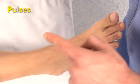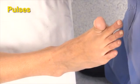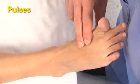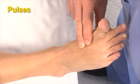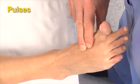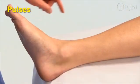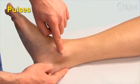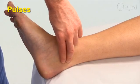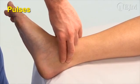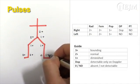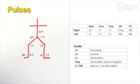You can usually identify the dorsalis pedis pulse by asking the patient to lift the great toe upwards. This pulse will be found lateral to the extensor hallucis longus tendon, which becomes visible when the great toe is in dorsiflexion. Palpate the posterior tibial pulse behind the medial malleolus, halfway between the malleolus and the Achilles tendon. Record the strength of pulses on an anatomical or tabular diagram.